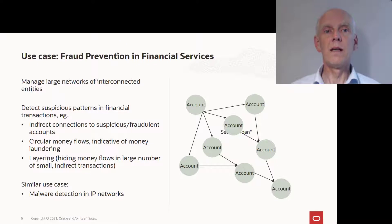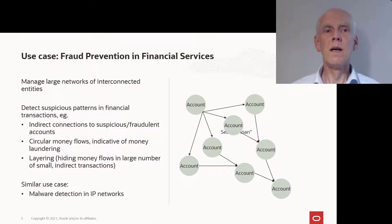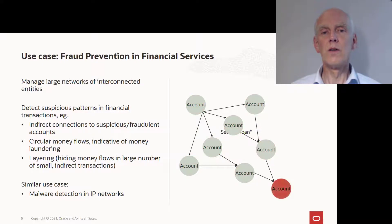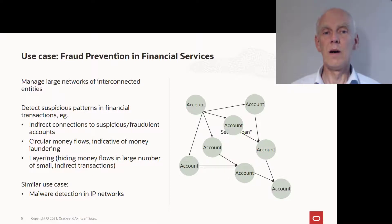The third capability I'd like to highlight is that graph databases are designed to detect patterns and indirect relationships. Our customers in financial services typically use this capability on large networks of financial transactions to identify suspicious or fraudulent behavior. Graph databases are great for identifying circular money flows, which can be indicative of money laundering. Another suspicious pattern is illustrated in the graph on the right-hand side, where rather than transferring money directly, someone is splitting up the money and transferring it through various intermediate steps — clearly looking like someone wanted to obfuscate how the money flows.